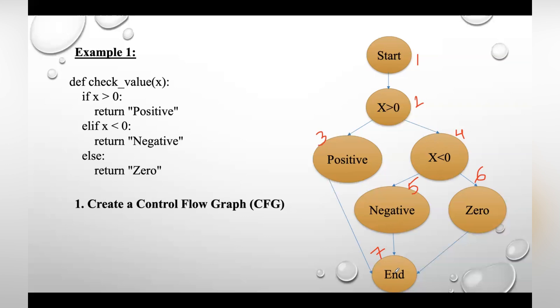After this, step two is we need to calculate cyclomatic complexity. For that, first we need to find out the total number of edges and nodes in the graph. So how many edges do we have? 1, 2, 3, 4, 5, 6, 7, and 8.